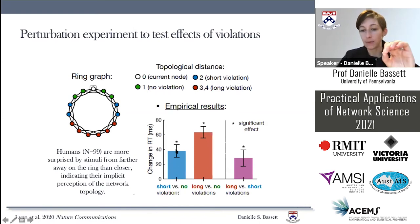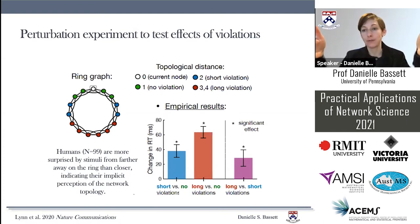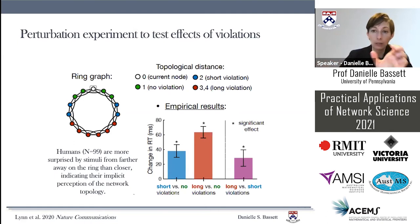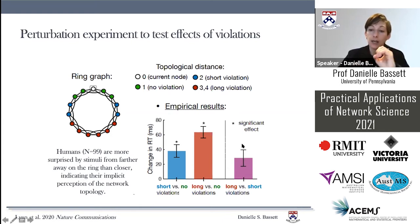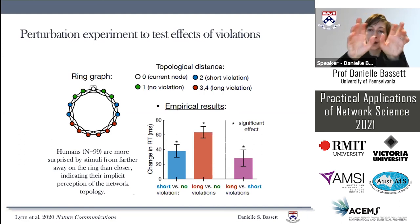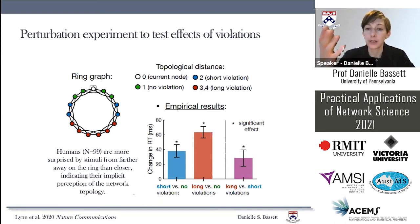Along the y-axis is change in reaction time. The first box plot shows reaction time for short violations versus no violations — above zero, confirming that seeing something novel causes slowing. The red bar shows long violation versus no violation — also above zero. The crucial comparison is in purple: long violation versus short violation. This bar is significantly above zero, meaning humans are slower to long violations than short ones. They're blending structure in their minds, understanding distances between items and being more surprised by longer distances.